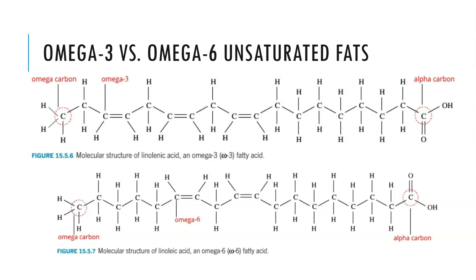This is what it looks like when those bonds are included. Remembering — it doesn't matter if it's written left to right or right to left — find the carboxyl, which is your alpha carbon, then go to the opposite end, which is your omega carbon, and count from there. 1, 2, 3 — that's an omega-3. 1, 2, 3, 4, 5, 6 — that's an omega-6 fatty acid.